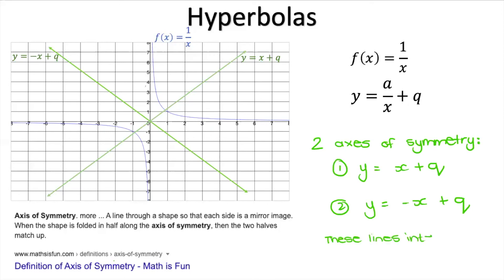These two axes of symmetry intersect at the point (0, q). In f(x) = 1/x there is no q value, so q = 0 and the point of intersection is (0, 0). But in any other graph, it would be the point (0, q).